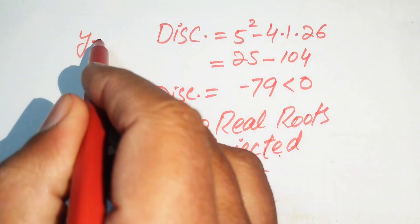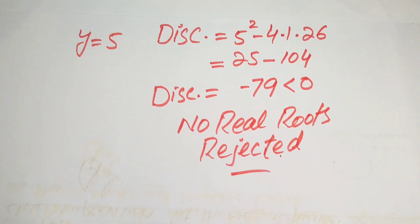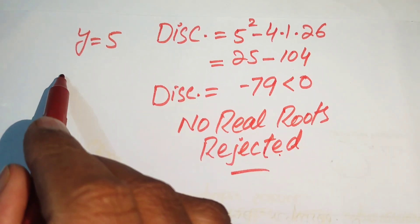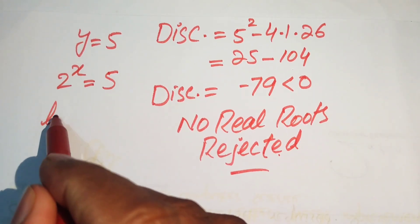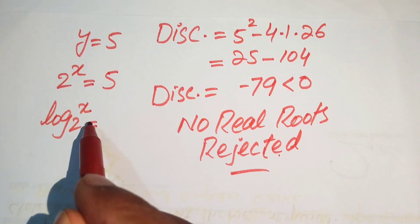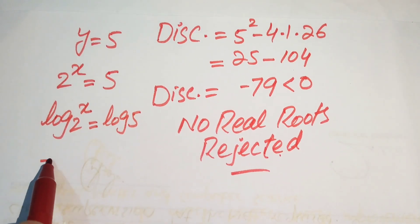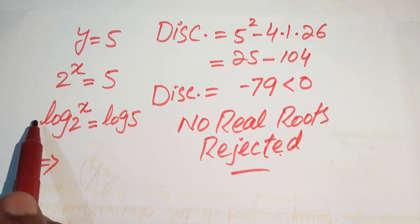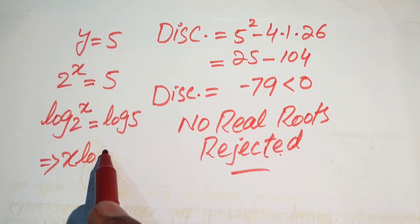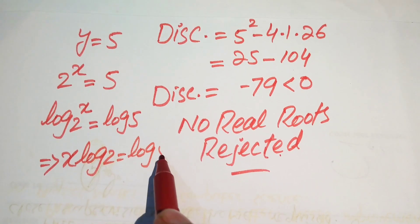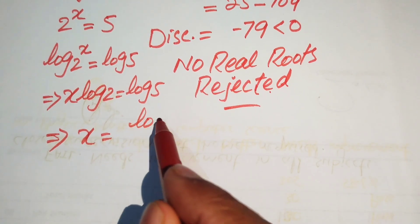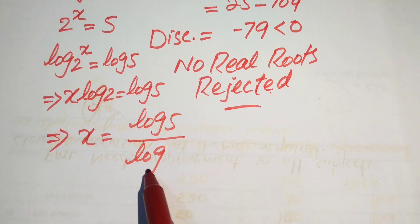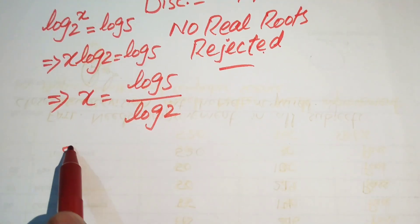From Case 1, y equals 5. Back-substituting y equals 2 to the power of x, we get 2 to the power of x equals 5. Taking log on both sides: log(2^x) equals log 5. Applying the log power rule, x times log 2 equals log 5, so x equals log 5 divided by log 2.